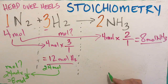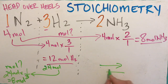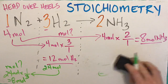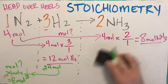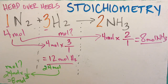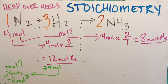By using the arrow in the proper direction — head over heels — it works every time, 100% of the time. The great thing about head over heels is if you set this up, you'll never get your mole ratios backwards. I know it's 8 moles of nitrogen because I brought it to that column.